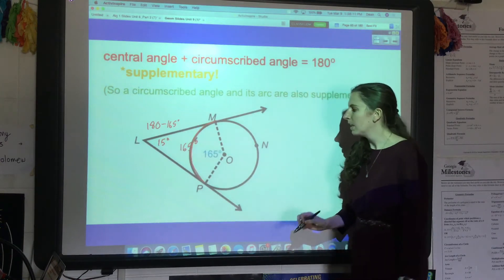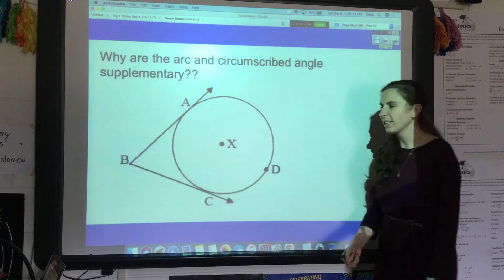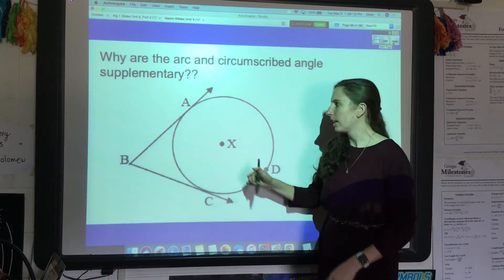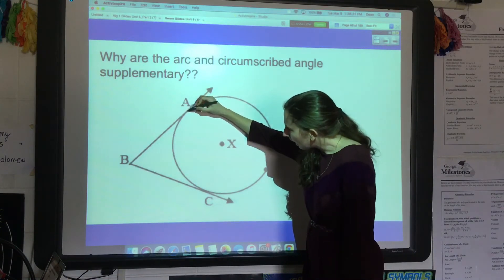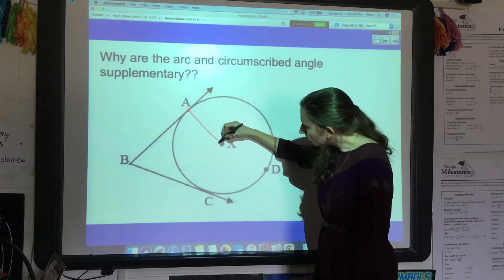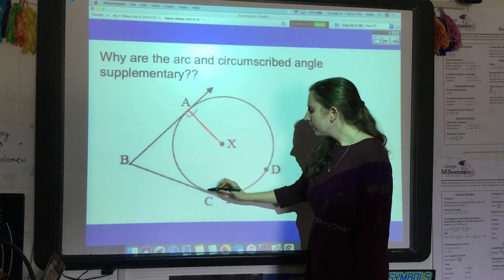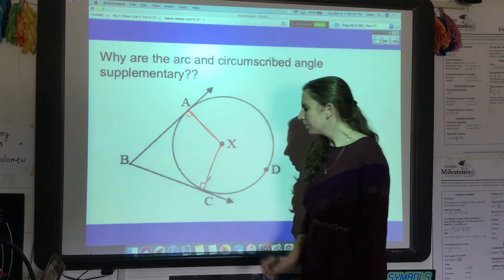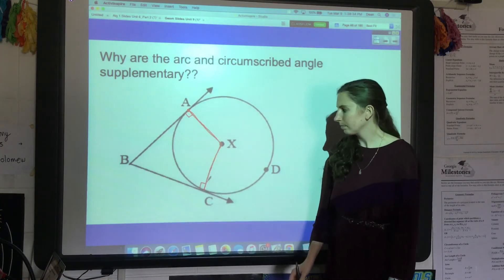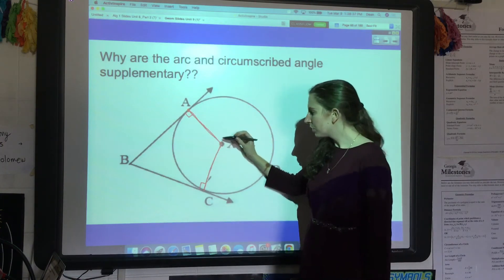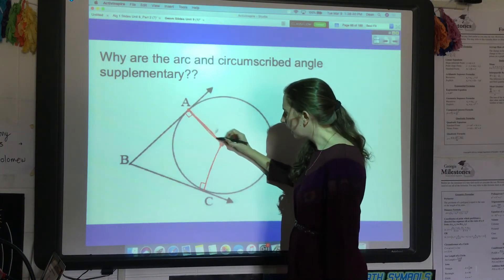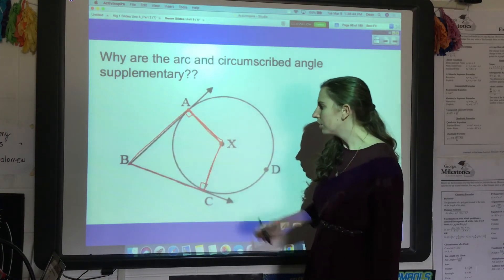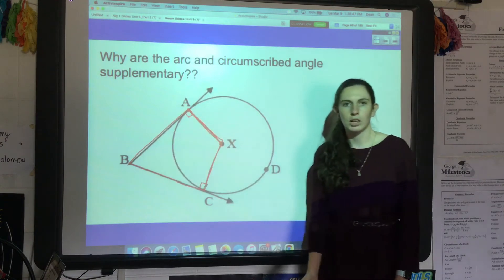Let's talk about the reason for this. Why is that the case? The reason is because of the whole 90-degree angle thing. Remember, this tangent line forms a 90-degree angle with the circle's radius, and this tangent line also forms a 90-degree angle with the radius. So what I've just formed is a quadrilateral—the central angle combined with this circumscribed angle forms this wonky-looking quadrilateral.